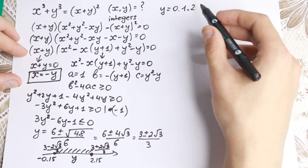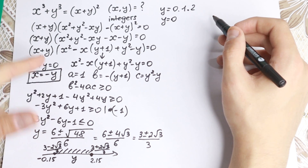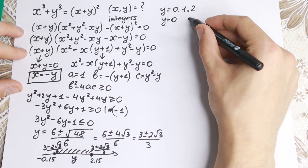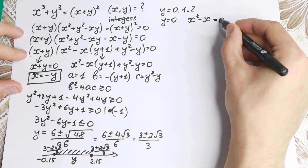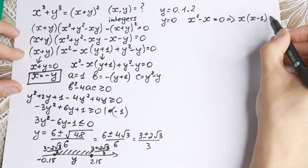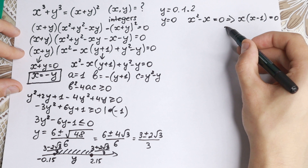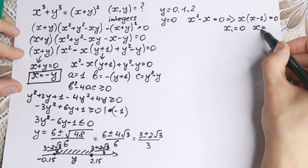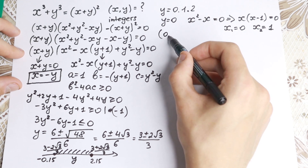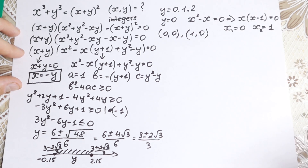Let's find our pairs. We have our y values, so we can easily find our pairs. If y equal to 0, we substitute — we have our quadratic equation x² minus x equal to 0. From here we can easily solve it: x times (x minus 1) equal to 0. So x equals 0 or x equals 1. So right here we find our first two pairs of solution: first pair x equal to 0, y equal to 0. Second pair x equal to 1, y equal to 0.